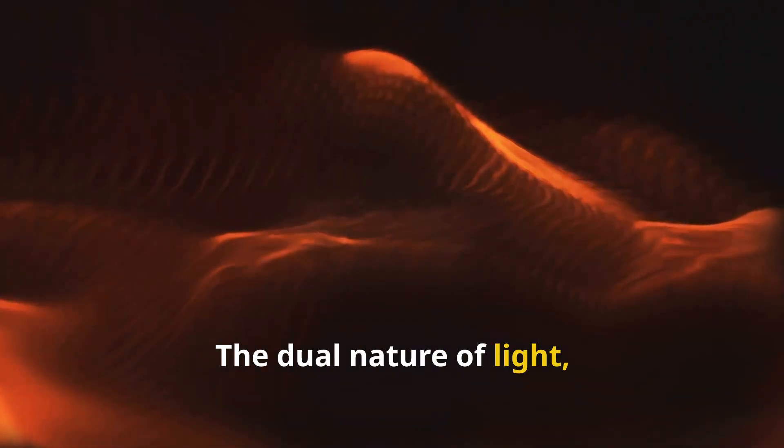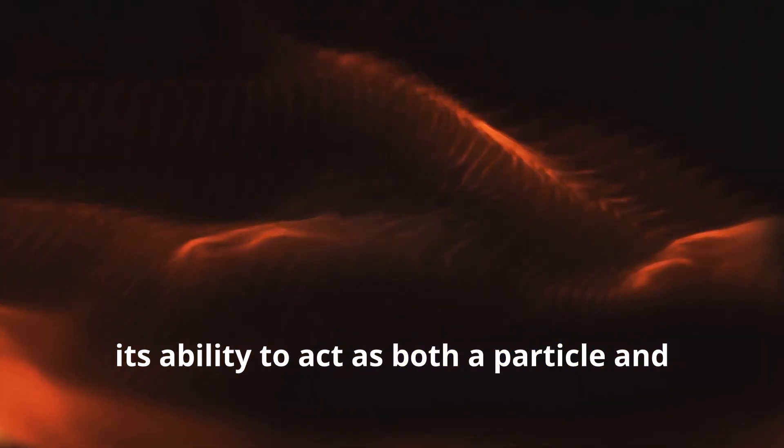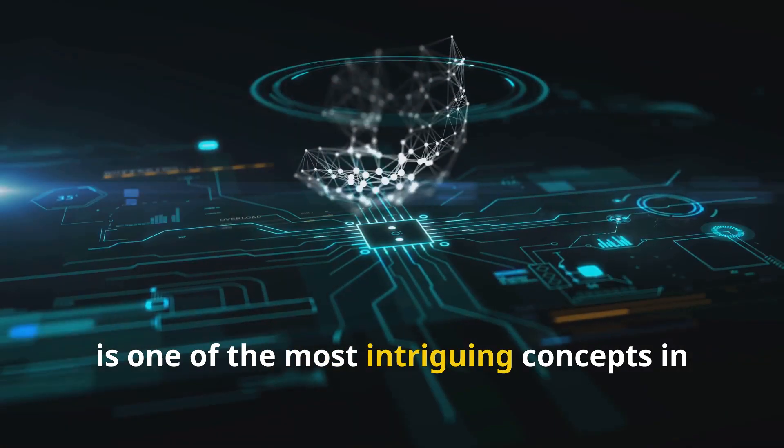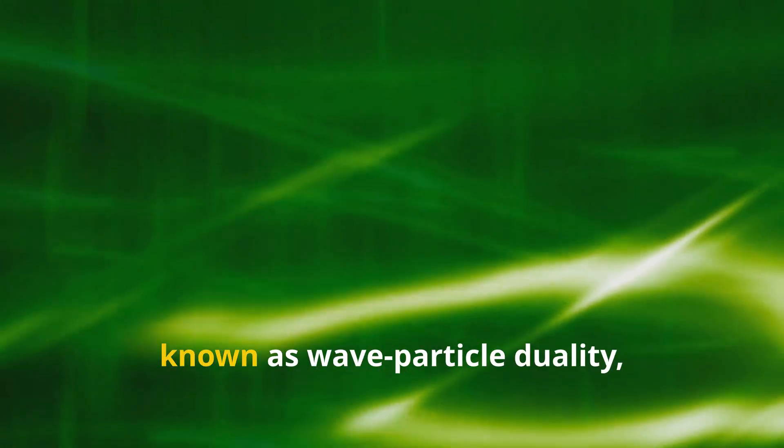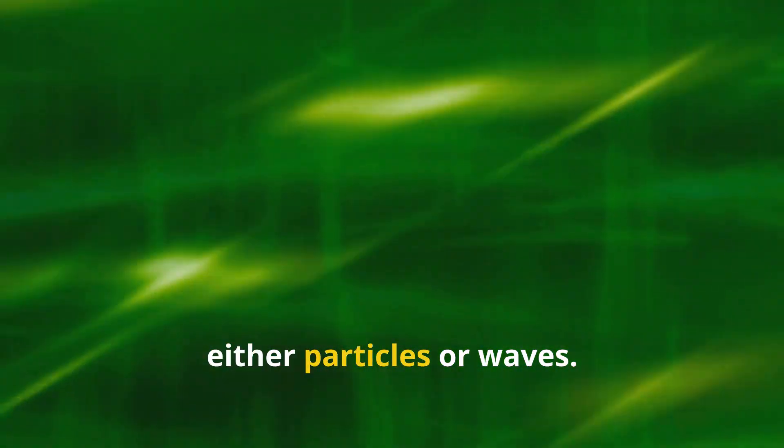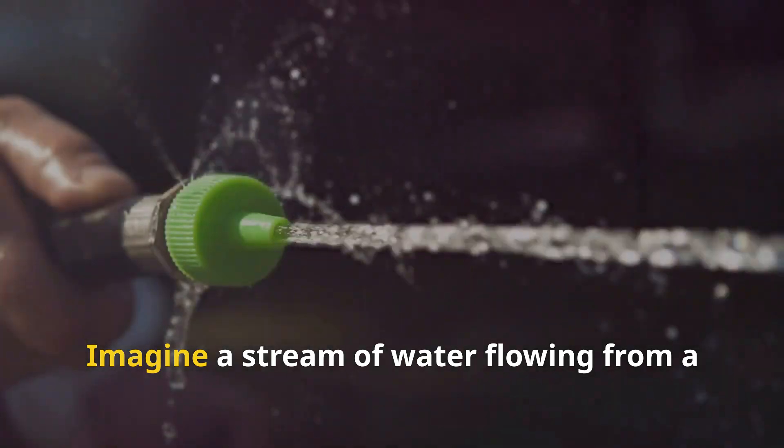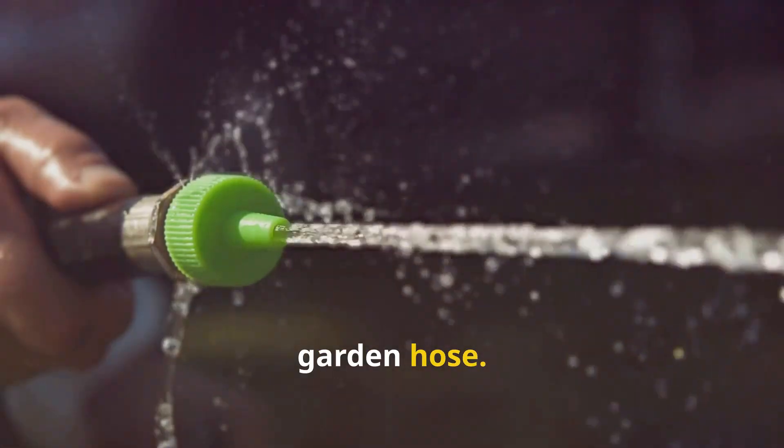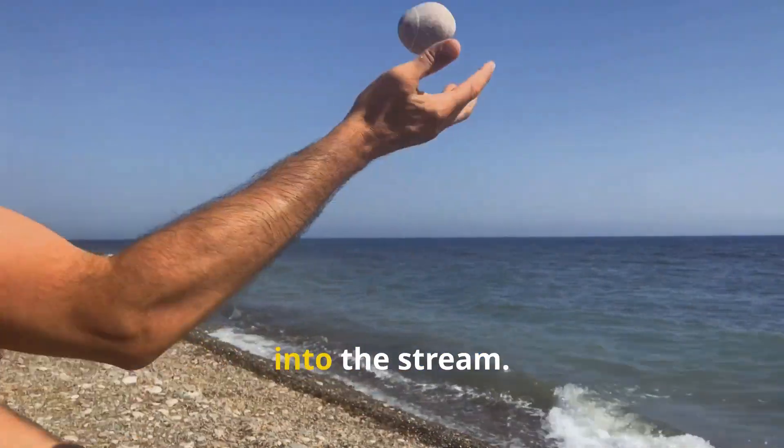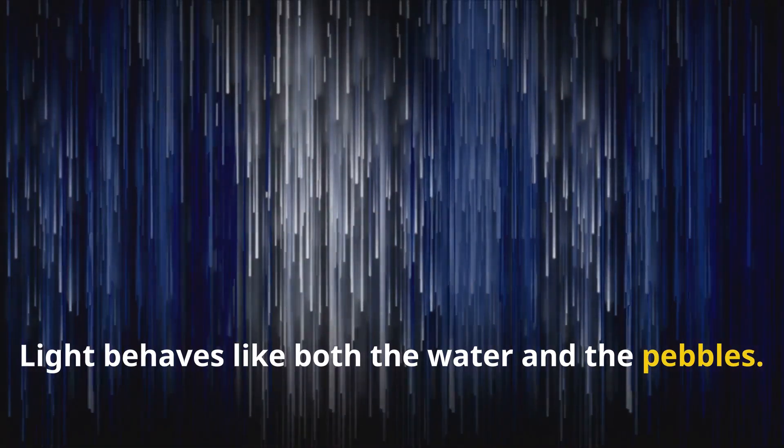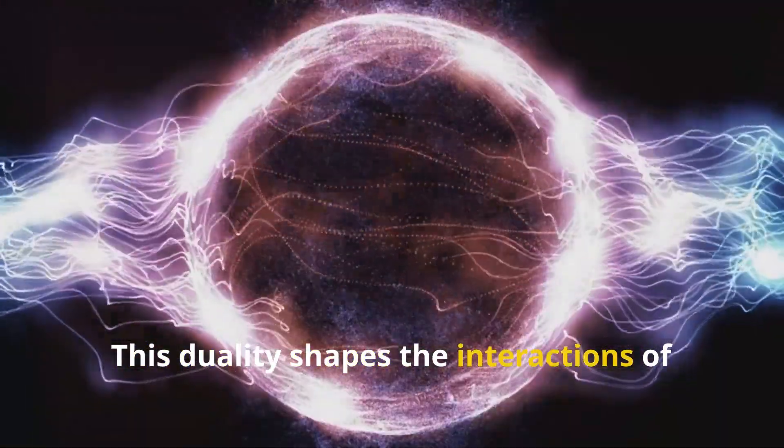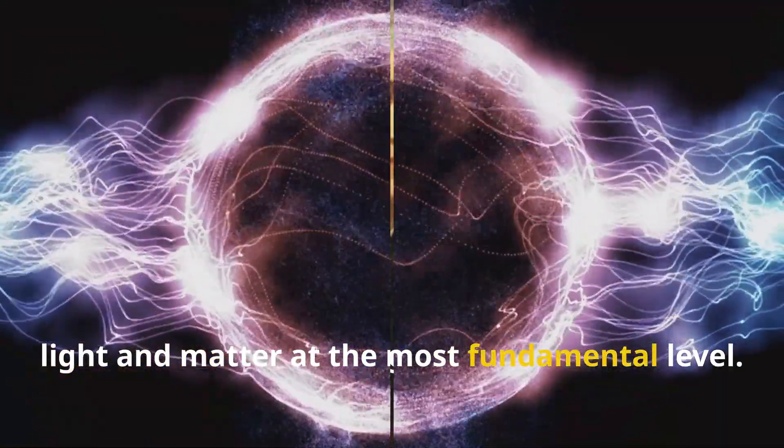The dual nature of light, its ability to act as both a particle and a wave, is one of the most intriguing concepts in quantum mechanics. This duality, known as wave-particle duality, implies that light doesn't adhere to our everyday experience of objects being either particles or waves. Imagine a stream of water flowing from a garden hose. Now imagine throwing a handful of pebbles into the stream. Light behaves like both the water and the pebbles. This duality shapes the interactions of light and matter at the most fundamental level.